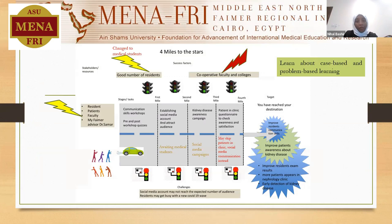That was my four-semester role map, which was very beautiful in the beginning, but then it had multiple life-strikings. At the beginning, I had a good number of medical residents of internal medicine who were working directly and indirectly with CKD patients and chronic disease patients, and I had cooperative faculty colleagues. All my stakeholders and resources were available and in hand.